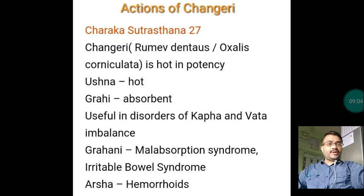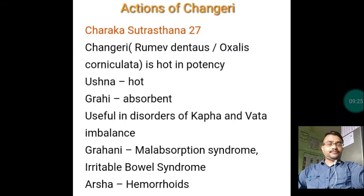Changeri, which is Oxalis Corniculata, is hot in potency — Ushna. It is Grahi — absorbent. Useful in disorders of Kapha and Vata imbalance. Grahani — it is useful in malabsorption syndrome and irritable bowel syndrome. And Arsahara — it is useful in hemorrhoids or piles.